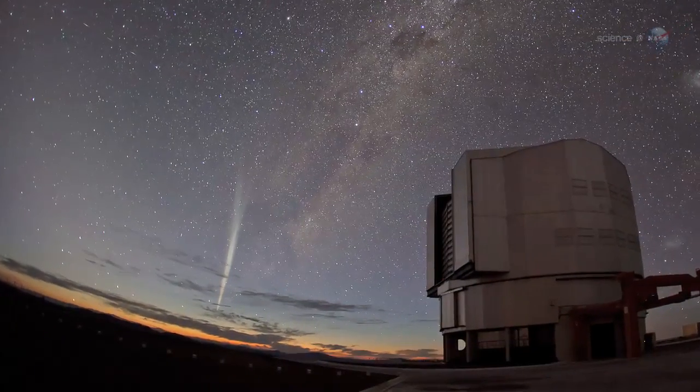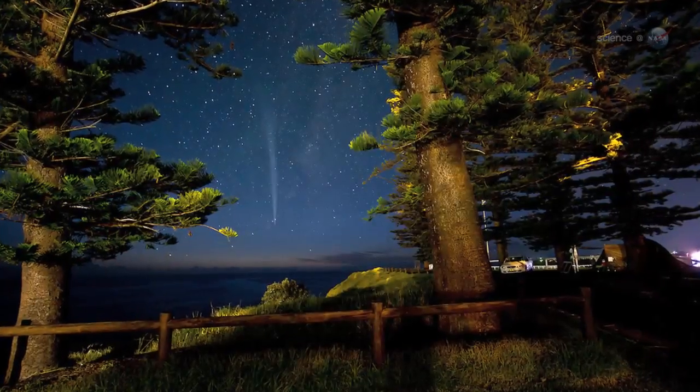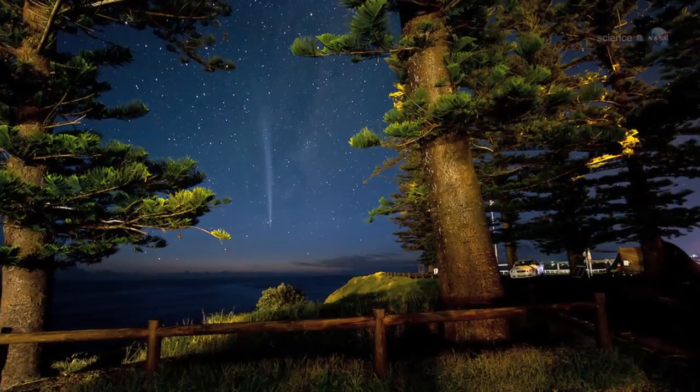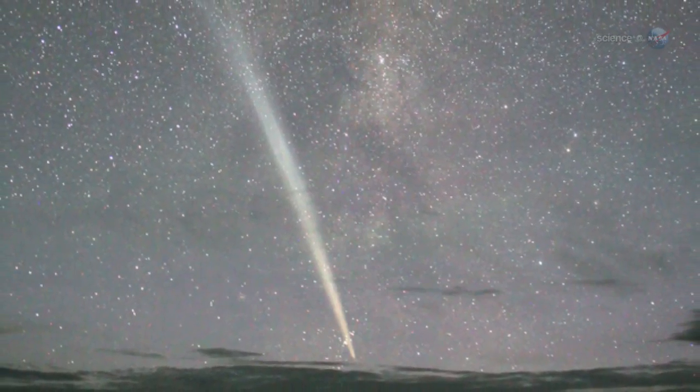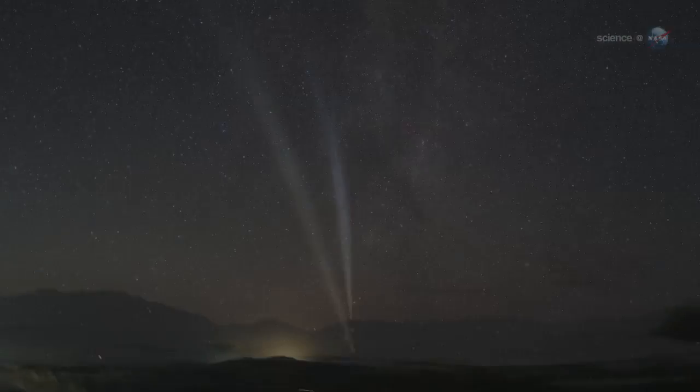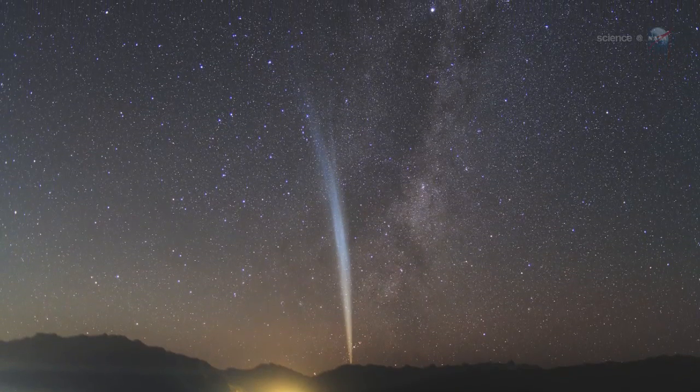Only a few days after it left the Sun, the comet showed up in the morning skies of the Southern Hemisphere. Observers in Australia, South America, and New Zealand likened it to a searchlight beaming up from the east before dawn. The tail lined up parallel to the Milky Way, and for a few days made it seem that we lived in a double-decker galaxy.